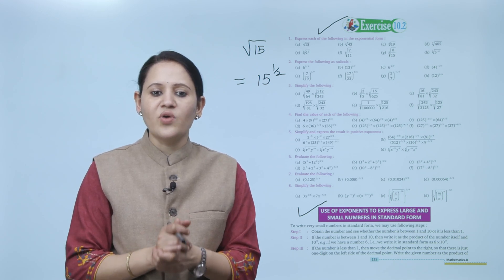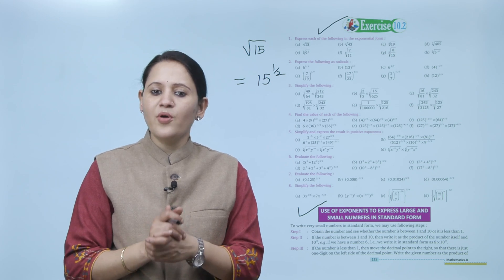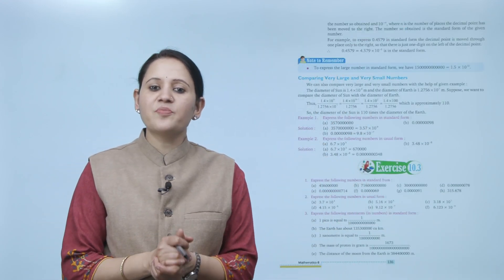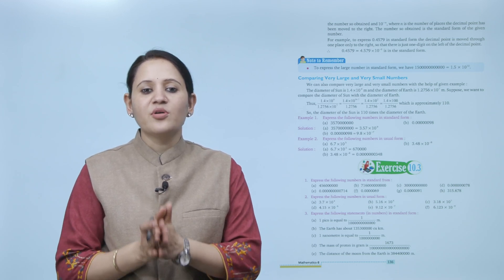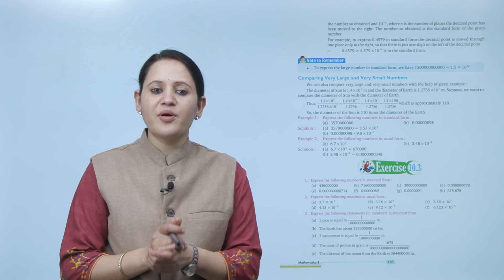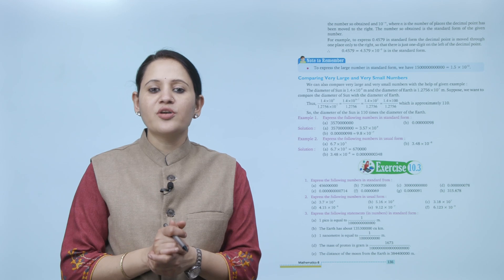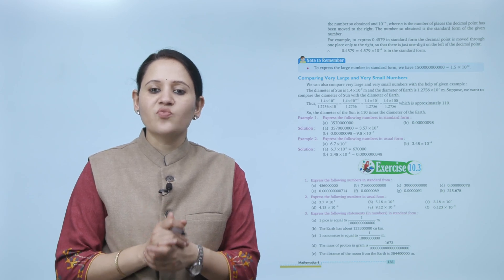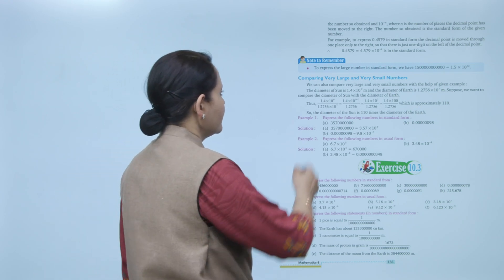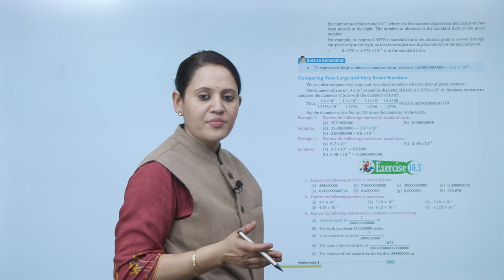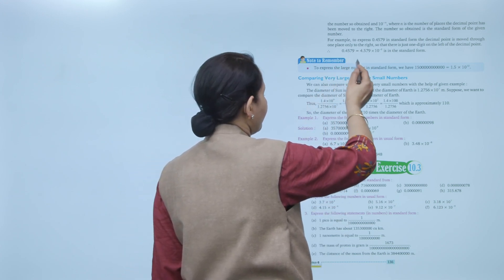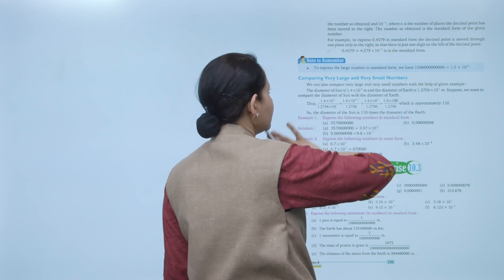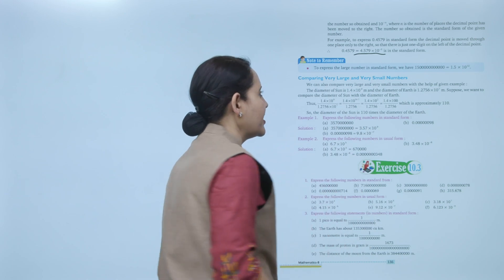Step 3: if the number is less than 1, move the decimal point to the right so that there is just one digit on the left side of the decimal point. Write the given number as the product of the number so obtained and 10 to the power -n, where n is the number of places the decimal point has been moved to the right. For example, to express 0.4579 in standard form, the decimal point is moved one place to the right, giving 4.579 × 10^(-1).